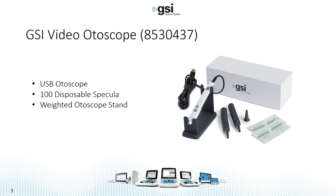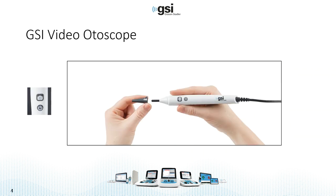The Otoscope package includes the Otoscope itself, which is USB powered with one cable, a hundred disposable specula, and a weighted Otoscope stand. The Otoscope itself only has two buttons: on/off and the camera or take-a-picture icon. The tips can be placed onto the end of the Otoscope and twisted slightly to secure them into place.